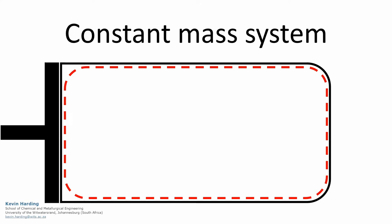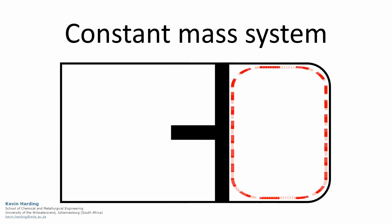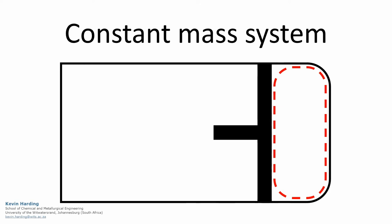In a constant mass system, all matter in the system remains within the system. No material crosses the system boundary, and using the same compression example, the volume will decrease.